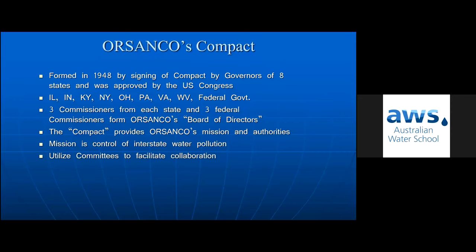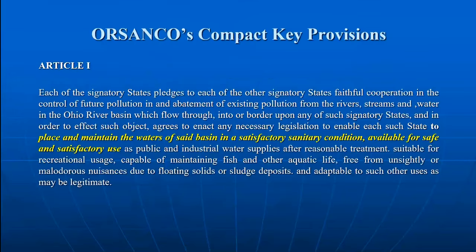We were formed as a compact agency — unique in the United States, one of only about half a dozen such organizations. We were approved by Congress, and our eight member states include the six states bordering the Ohio River: Illinois, Indiana, Kentucky, Ohio, Pennsylvania, Virginia, and New York. We have three policy board members from each state and three federal commissioners appointed by the President. Our compact, negotiated over 20 years, provides our guidance and authority, with a mission of controlling interstate water pollution.